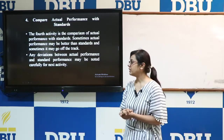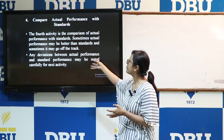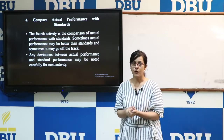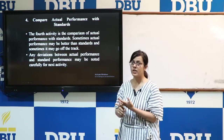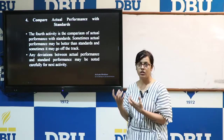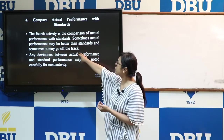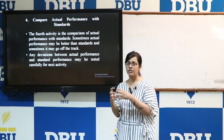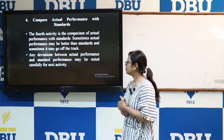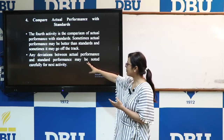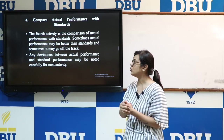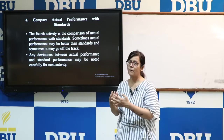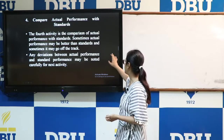The next step is to compare actual performance with the standards. When the appraiser finds the actual performance, they compare it with the established targets. Sometimes the actual performance may be better than the standards, and sometimes it may go off track. If there are any deviations between actual performance and standards, they are noted carefully for the next activities.